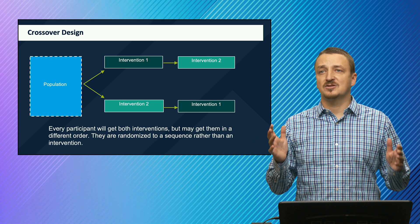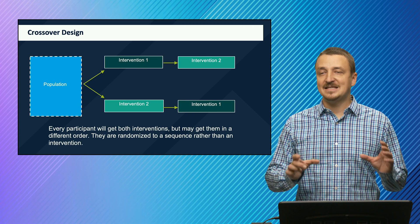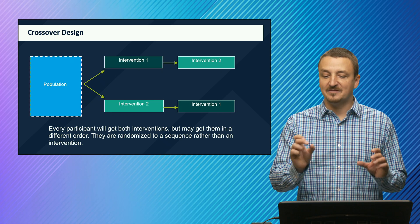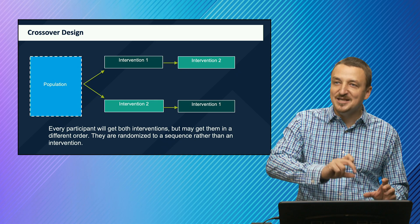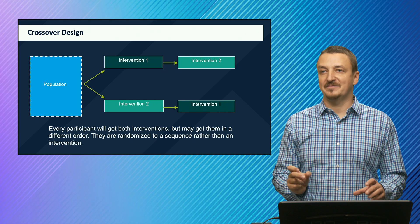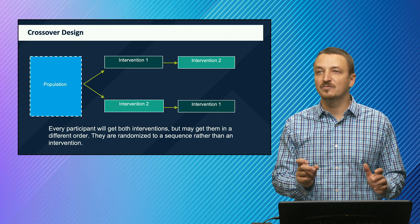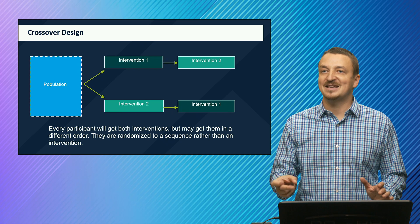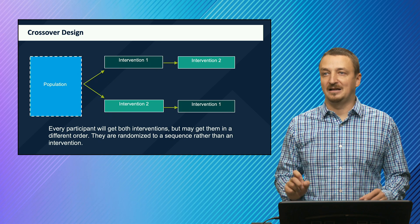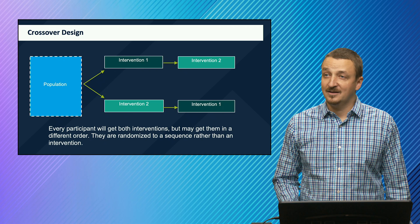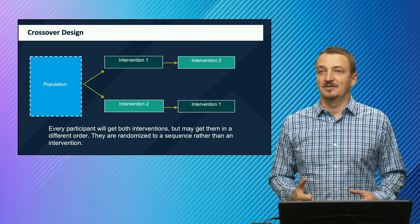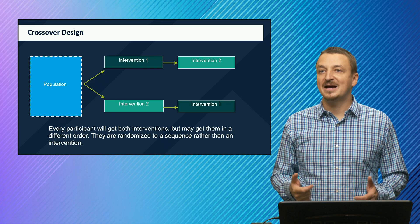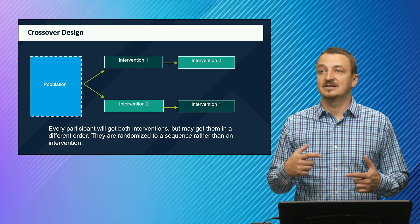Here you see the crossover design and what it looks like. Basically you have a population and they get randomized to receive either intervention one or intervention two, and then this intervention is crossing over to the other intervention. So those randomized to intervention one will then receive intervention two later in the trial, while those randomized to intervention two later in the trial receive intervention one. So every participant will get both interventions, but they may get them in a different order. They are randomized to a sequence rather than an intervention.